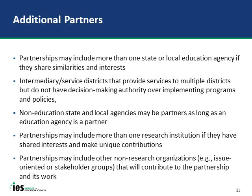Non-education state and local agencies may be useful partners as long as the education agency is also a partner. For example, if you wanted to study foster children, you would include your education agency and also a social service agency focused on foster children. One project combines the Connecticut Department of Education and the Connecticut Department of Justice, along with a University Center on Children, examining the education of court-involved youth. You can also include more than one research institution, but you must argue there is a shared interest and unique contribution beyond the primary partner.